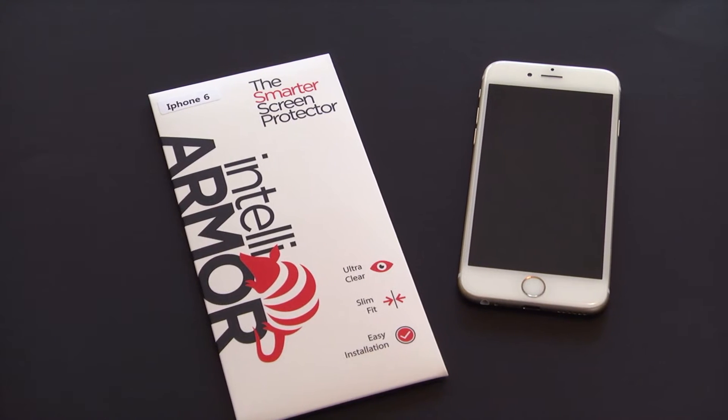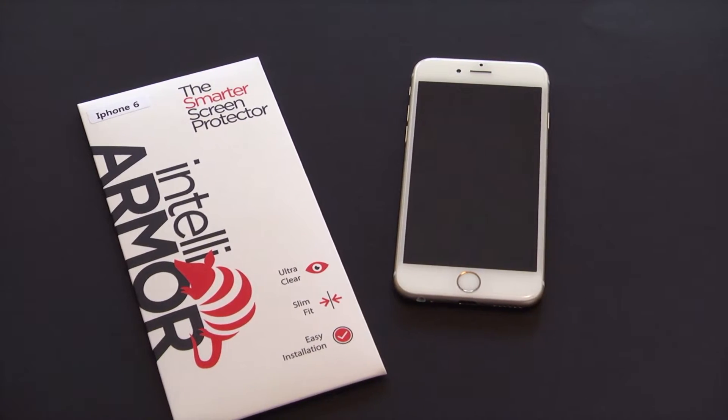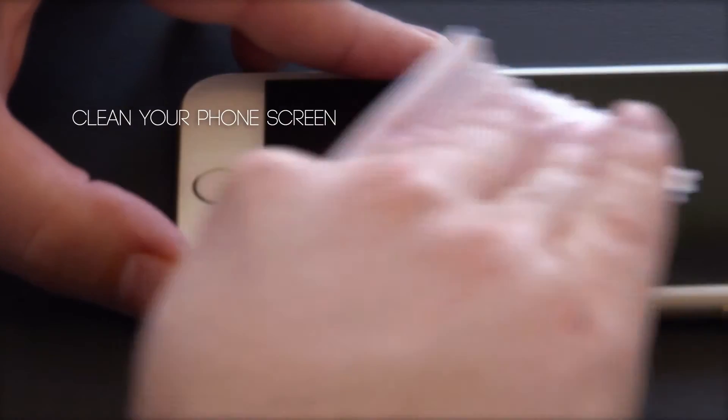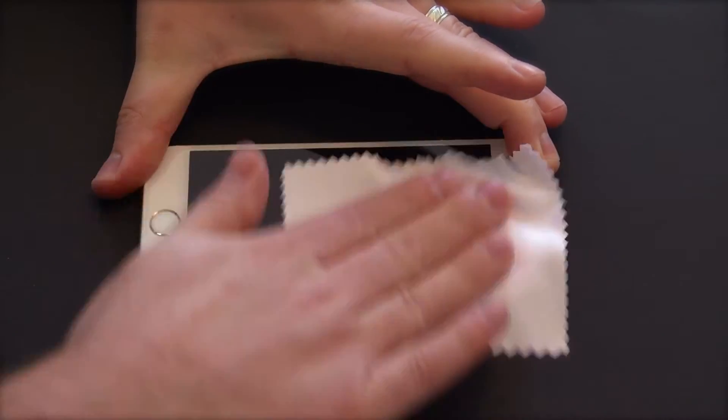Before proceeding with the installation, be sure to wash your hands thoroughly to remove any residual oils. The first step is to thoroughly clean your phone's screen with the installation kit. Use the provided microfiber cloth to clean and polish the screen.